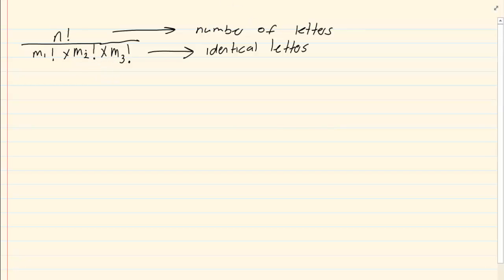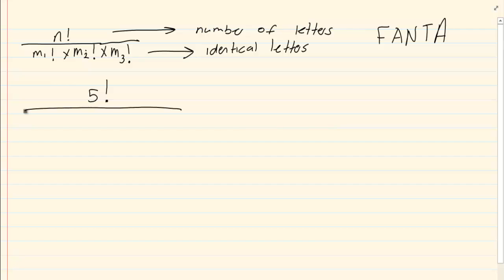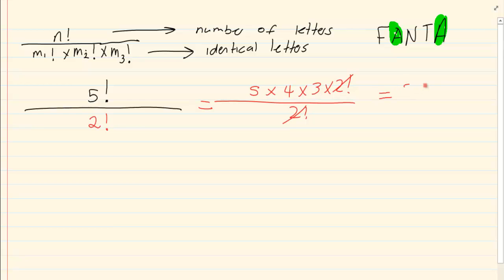So what we use is the formula: the factorial of the total number of letters divided by the factorial of the repeated letters. Using FANTA again — there are five letters, and the letter A appears twice. So the answer is 5×4×3×2 all over 2, which cancels to 5×4×3. Or you can simply use your calculator: 5 factorial over 2 factorial, giving an answer of 60.